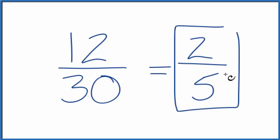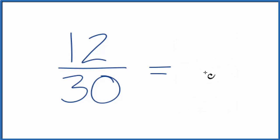There's another way we could do this as well. We could say that we know that these are both even numbers, so we could divide them by 2. 12 divided by 2, that's 6. 30 divided by 2 is 15.